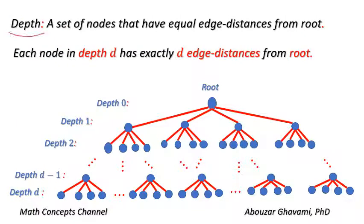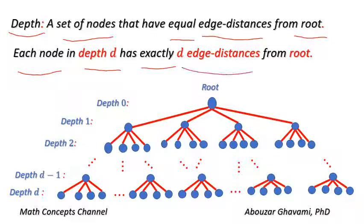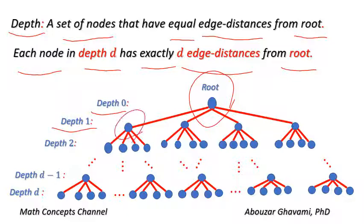A depth in a hierarchical tree is a set of nodes that have equal edge distances from the root. Each node in depth D has exactly D edge distances from the root. For example, the root node is at depth 0, as there is no edge between the root and itself. Each node at depth 1 has exactly one edge distance from the root, and each node at depth 2 has exactly two edge distances from the root.